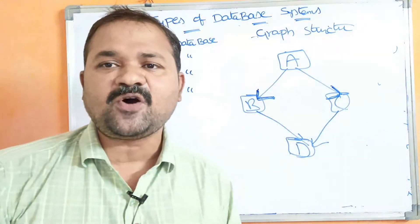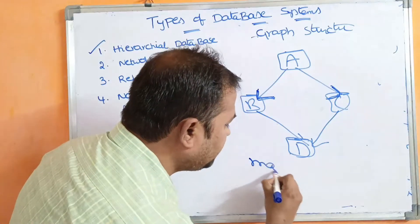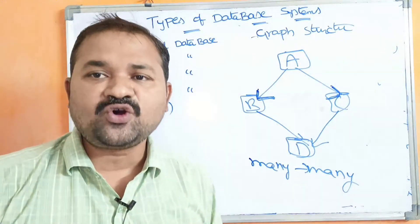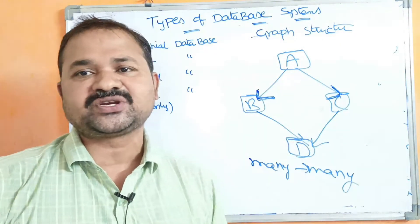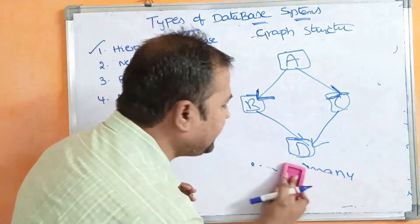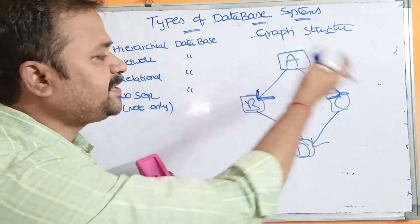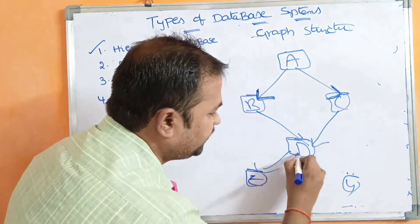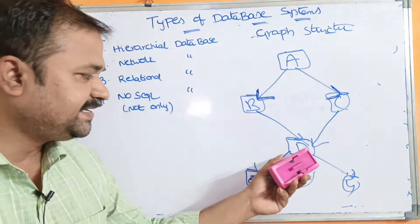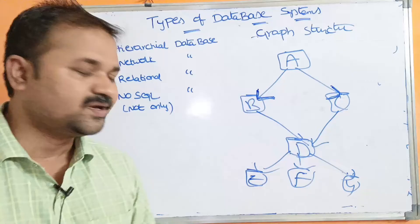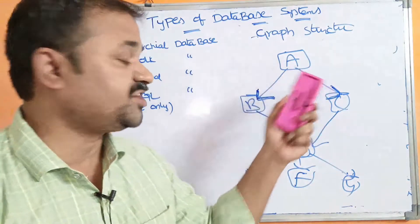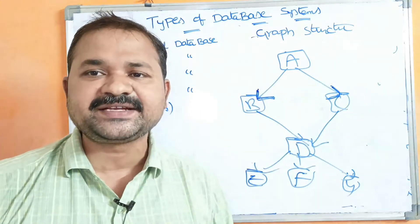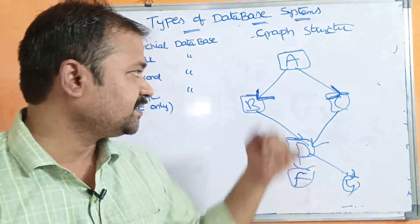The network database mainly forms a many-to-many relationship, meaning one node can have many number of parent nodes and many number of children nodes. For example, node D's parents are B and C, and D's children can be E, F, G. A node can have many parents and many children.